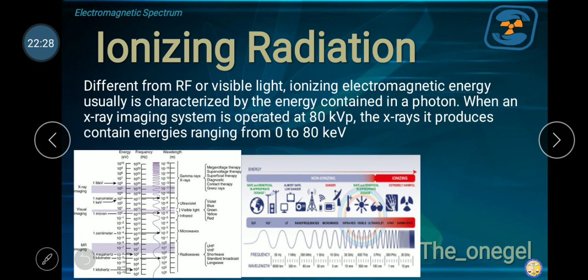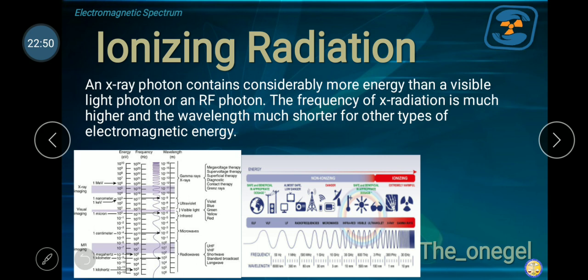When an x-ray imaging system is operated at 80 kVp, the x-rays it produces contain energies ranging from 0 to 80 kilo electron volt. We are now mentioning about the energies. An x-ray photon contains considerable more energy as compared with light photon or photon frequency. That's why its location is above ultraviolet. It has much higher frequency and energy, but much lower wavelength. The frequency of x-radiation is much higher and wavelength much shorter for other types of electromagnetic energy.